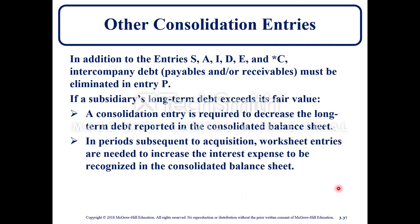Other consolidation entries: in addition to entries S, A, I, D, E, and C, intercompany debt — payables or receivables — must be eliminated with entry P. If a subsidiary's long-term debt exceeds its fair value, a consolidation entry is required to decrease the long-term debt reported in the consolidated balance sheet. In periods subsequent to the acquisition, worksheet entries are needed to increase the interest expense to be recognized in the consolidated balance sheet.